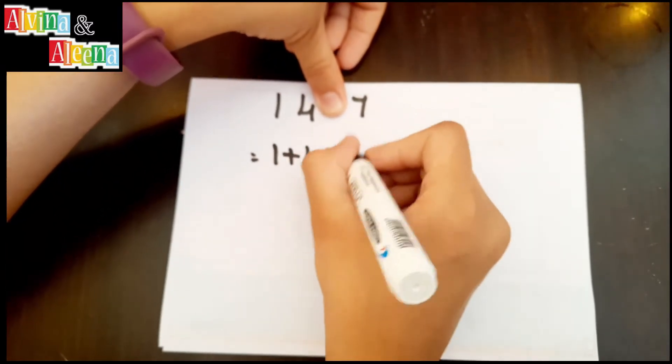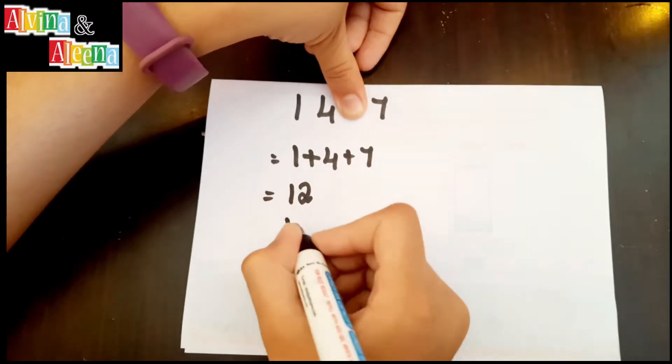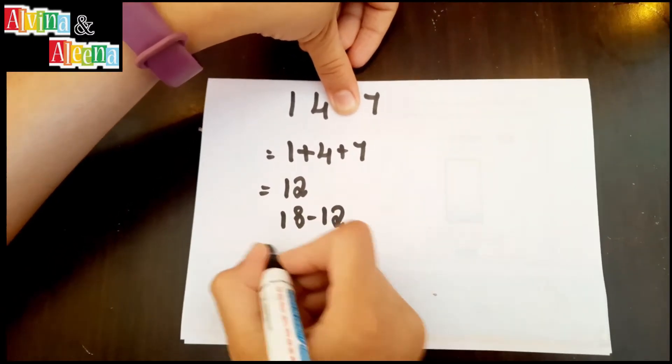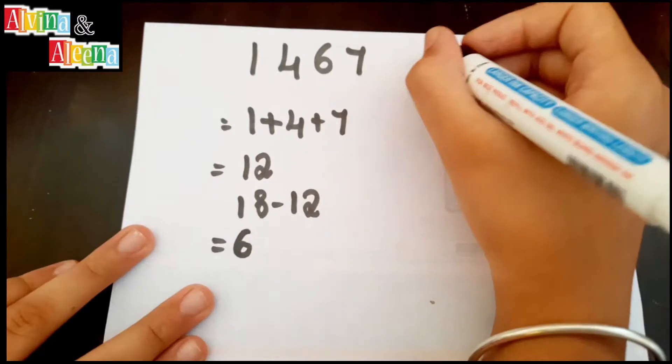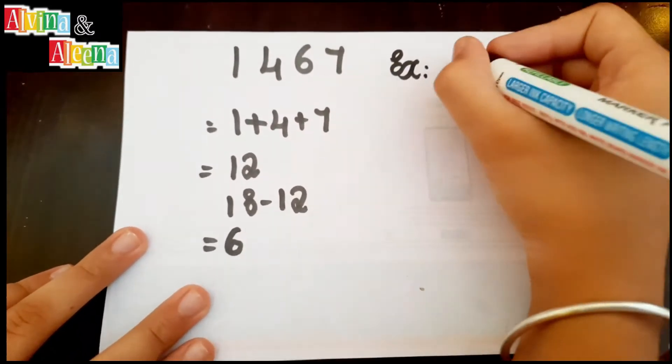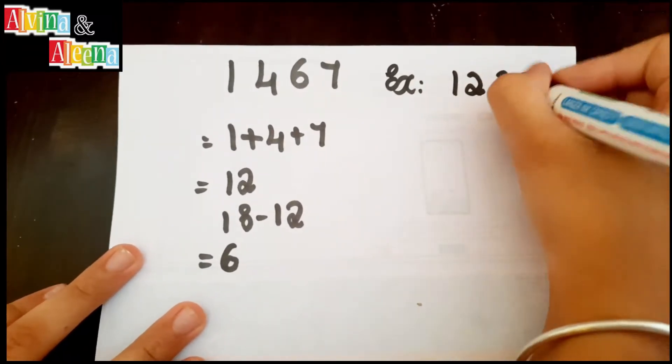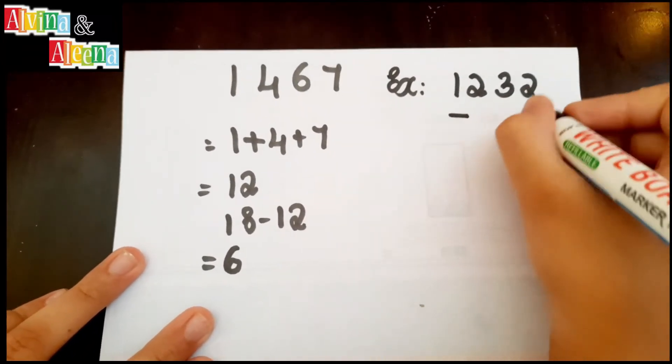If the answer is less than 9, then you have to subtract it from 9. If the answer is more than 9, then you have to subtract from 18. If the answer is more than 18, then subtract from 27, and so on.